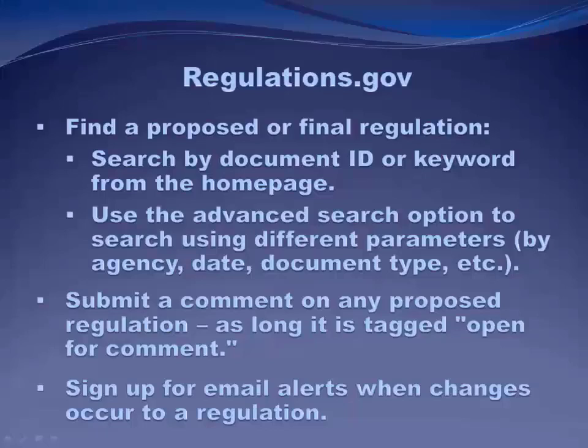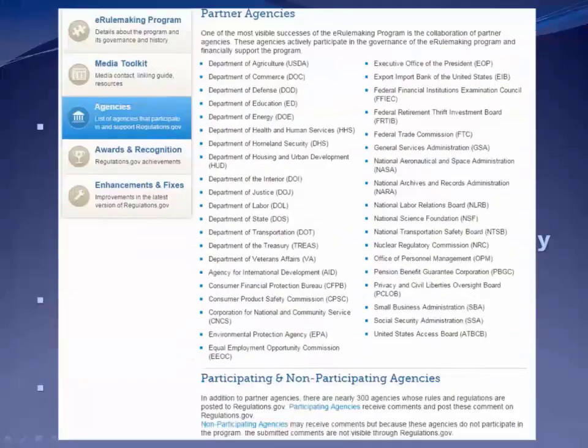You can also find final regulations, notices, science and technical findings, guidance, and adjudications — those quasi-judicial determinations I mentioned earlier — on regulations.gov, as well as the unified agenda and regulatory plan. Here's some background information on the site showing which agencies participate. You can scroll down to see the full list of 300 participating agencies before you start searching, to confirm whether the agency you're interested in uses regulations.gov for its rulemaking.